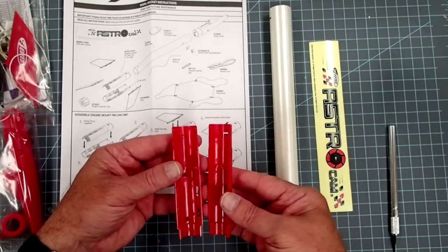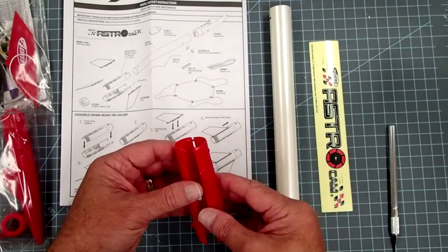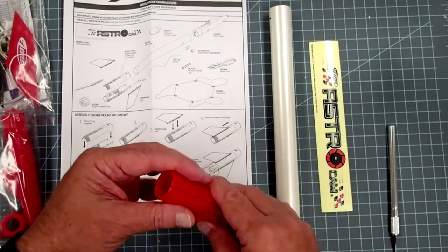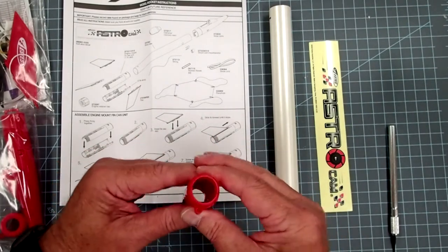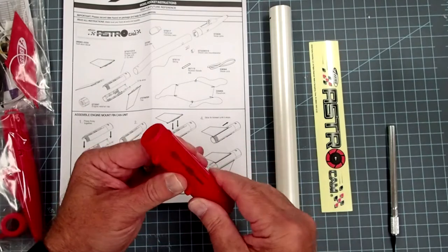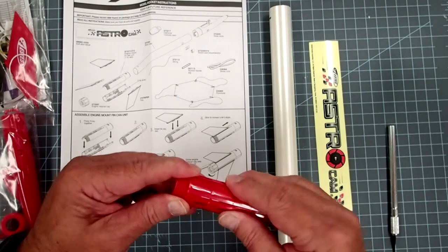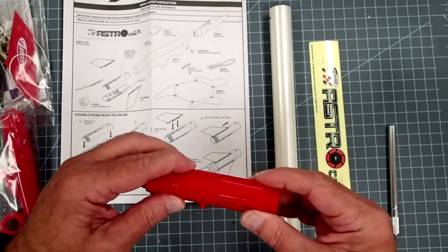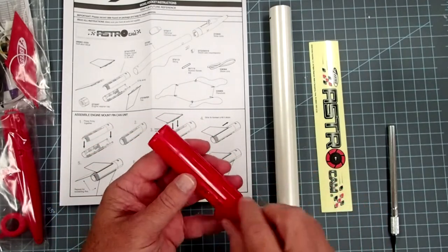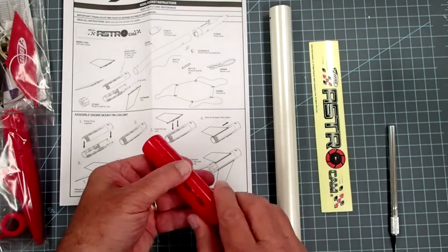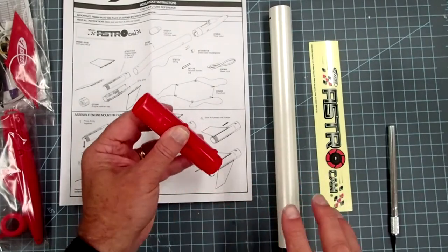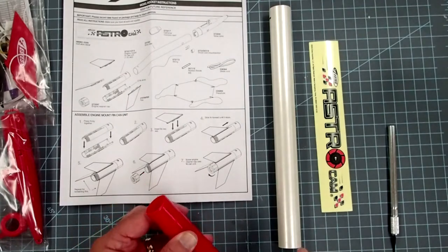All right, and this is meant to simply pop together. So, I put the pegs into the corresponding holes, and then that just pops together like that. Now, if you are of the mind to, you could use a little bit of plastic model cement to hold this together, but I am just going to assemble it here as the instructions show.